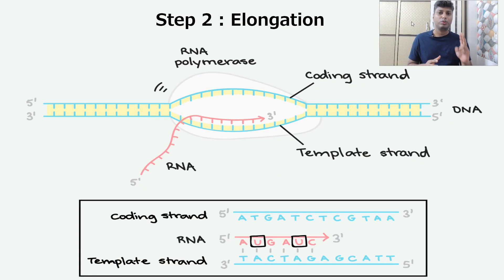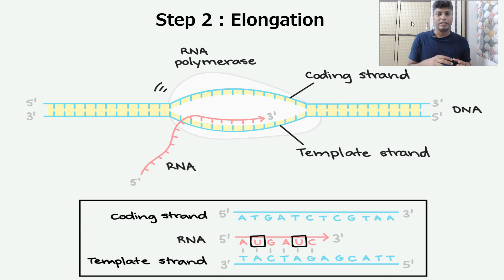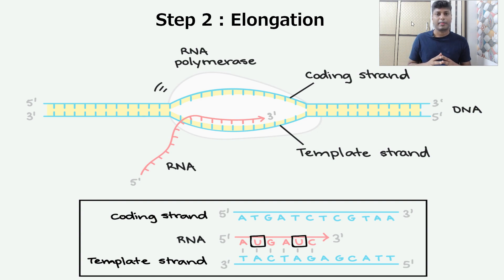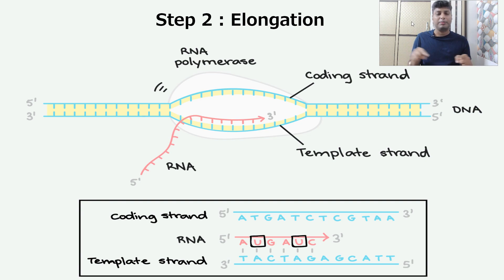Step number two is elongation. Once the RNA polymerase attaches to the promoter site on the DNA, it is going to open the DNA strands. Once the DNA strands open, it becomes bubble-shaped, and this particular bubble is called a transcription bubble.